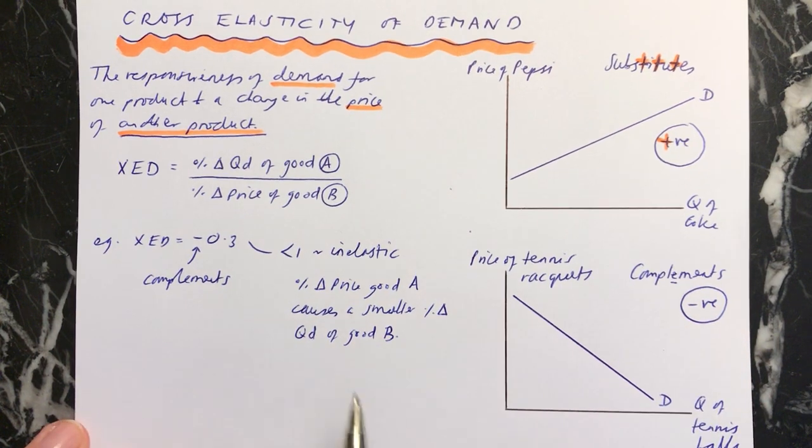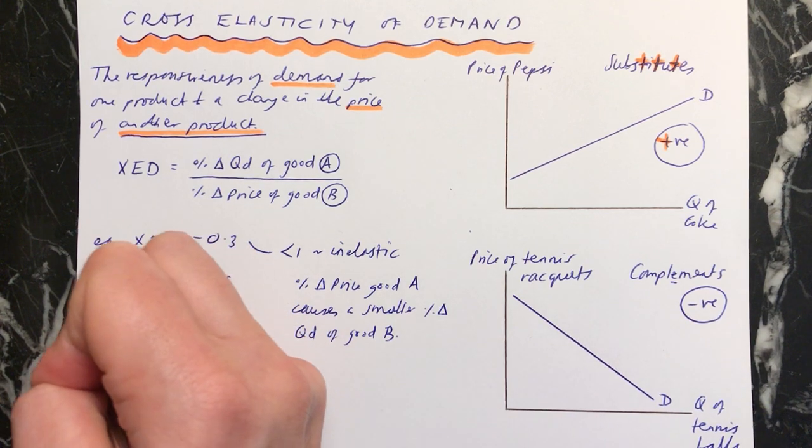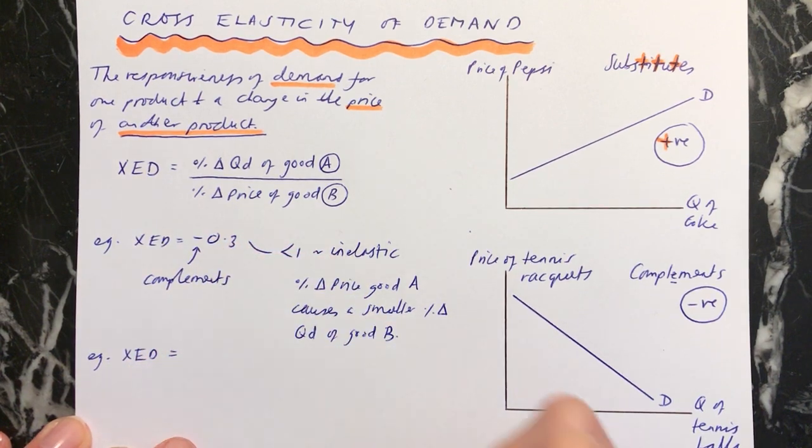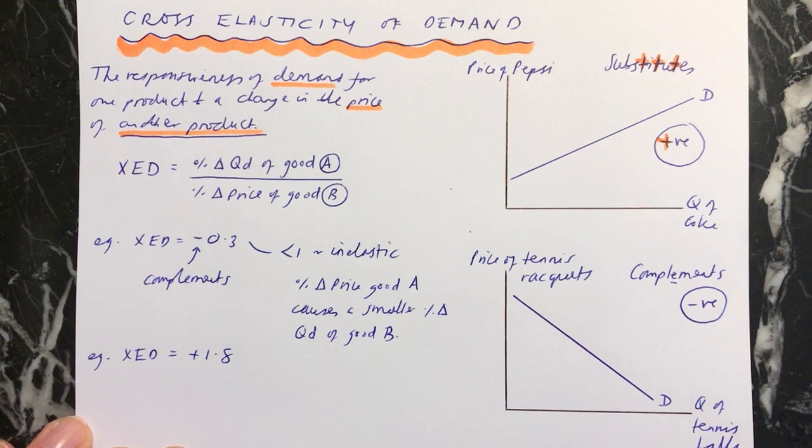Let's do another one. You might want to pause the video here in a moment, see if you can work this out for yourself. If your XED was equal to plus 1.8, what would that mean about the product?